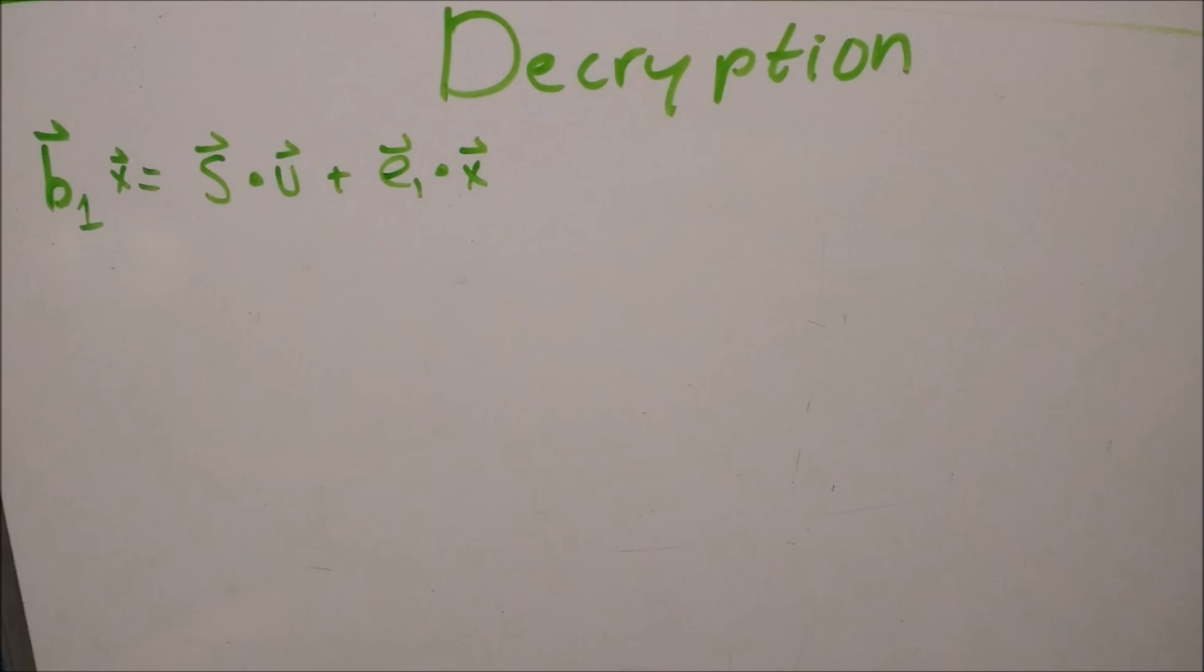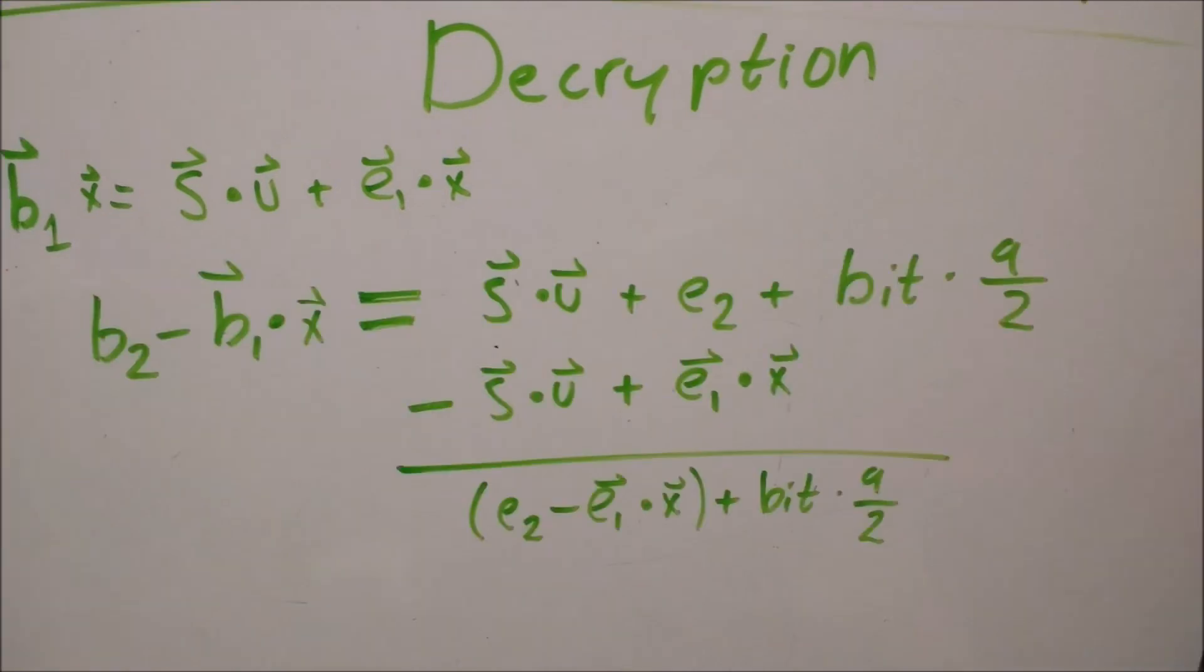Alice can find out if Bob sent a 0 or a 1. She multiplies b1 by her private key x, then she takes the difference of b2 minus b1 times x. By distributing the x in the first equation, we can expand out and write b1 times x equals s times u plus e1 times x. The su terms cancel in this subtraction, leaving just e2 minus e1x plus bit times q over 2.